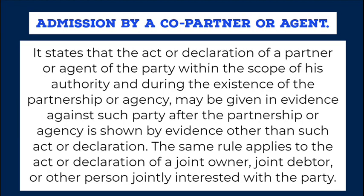Admission by a co-partner or agent. It states that the act or declaration of a partner or agent of the party within the scope of his authority and during the existence of the partnership or agency may be given in evidence against such party after the partnership or agency is shown by evidence other than such act or declaration. The same rule applies to the act or declaration of a joint owner, joint debtor, or other person jointly interested with the party.